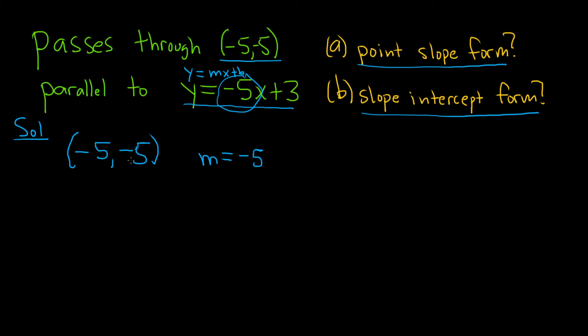Let's go ahead and do part a. Part a wants point-slope form. So let's go ahead and write down the formula. That would be y minus y₁ equals m parentheses x minus x₁.